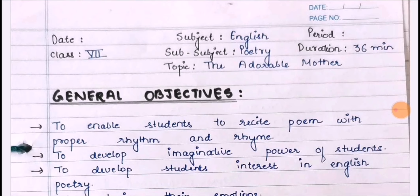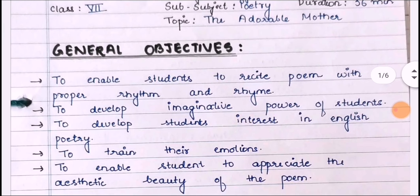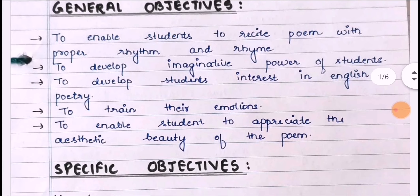We shall write the general objectives of English poetry. To enable students to recite poems with proper rhythm and rhyme. To develop imaginative power of students. To develop students' interest in English poetry. To train their emotions. To enable students to appreciate the aesthetic beauty of the poem.